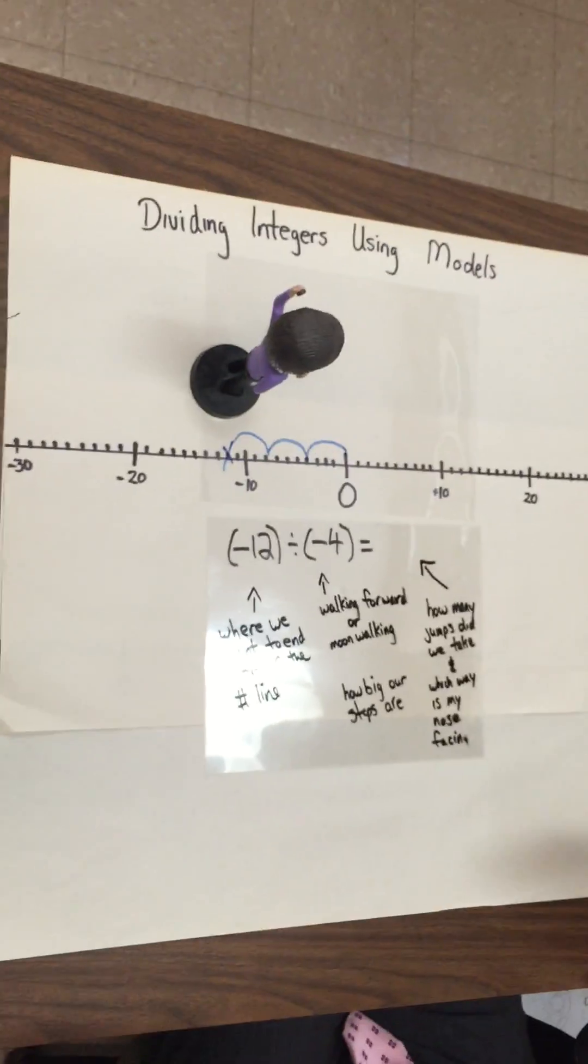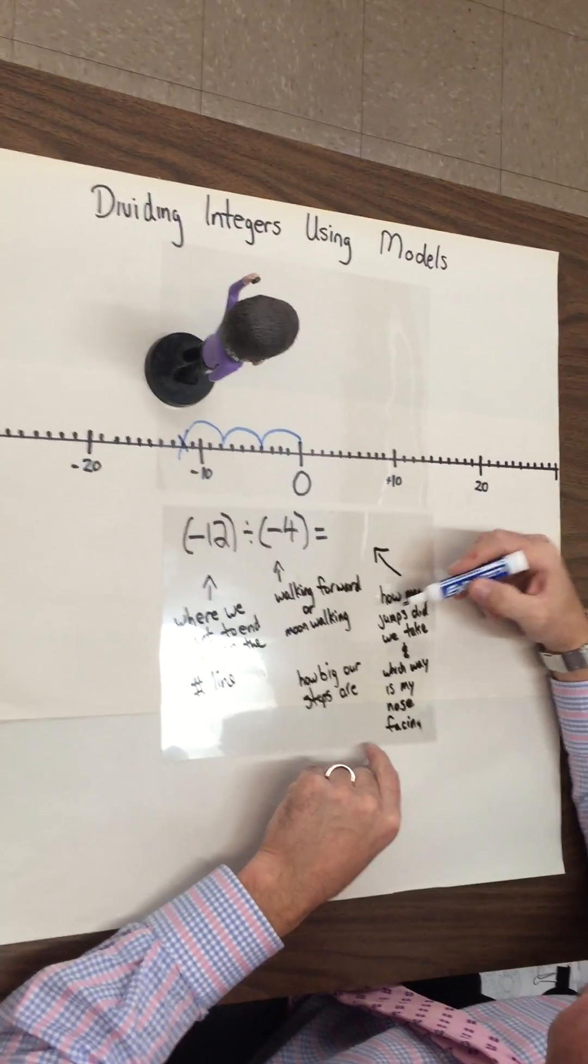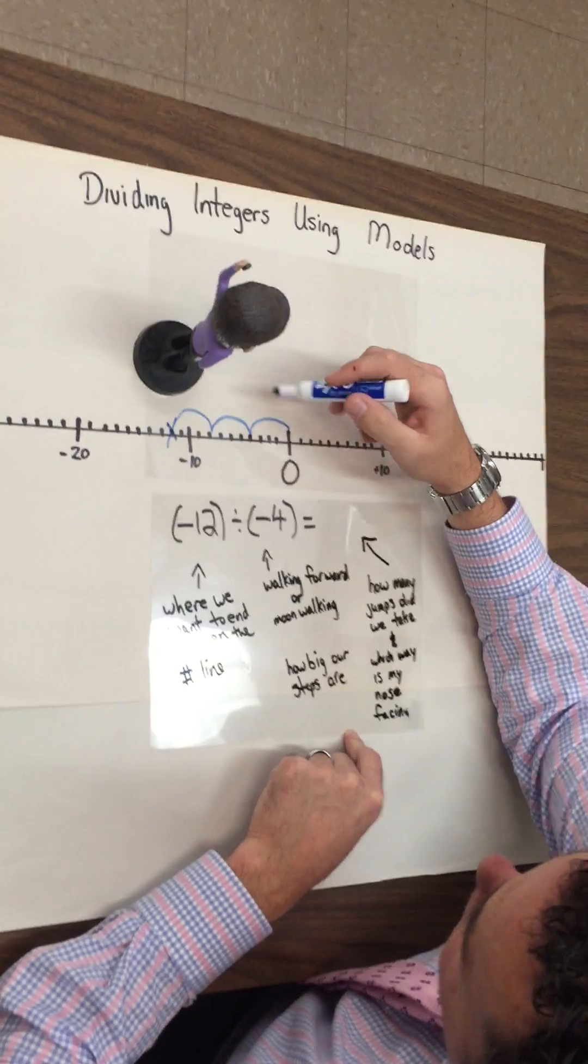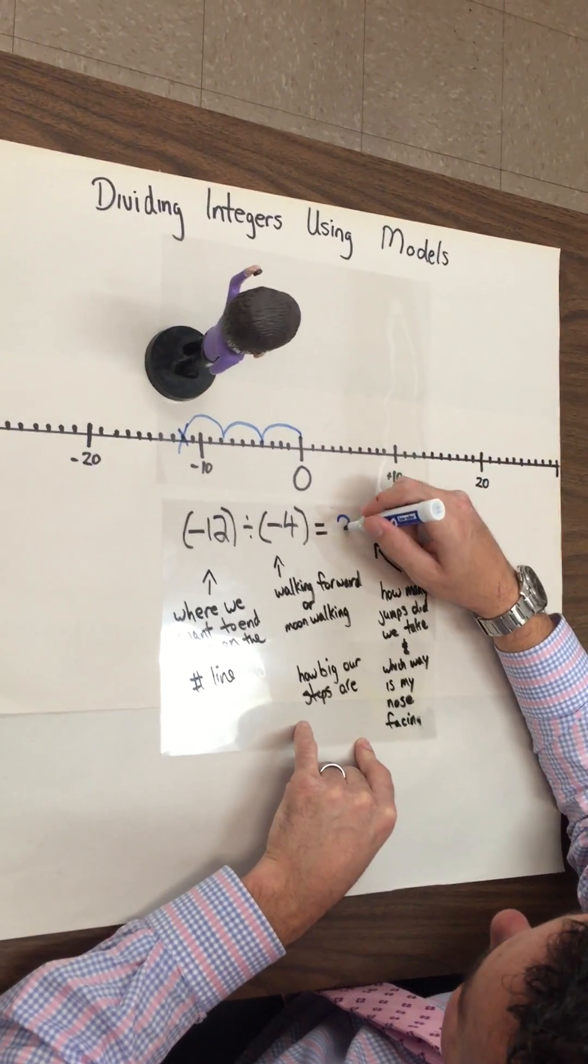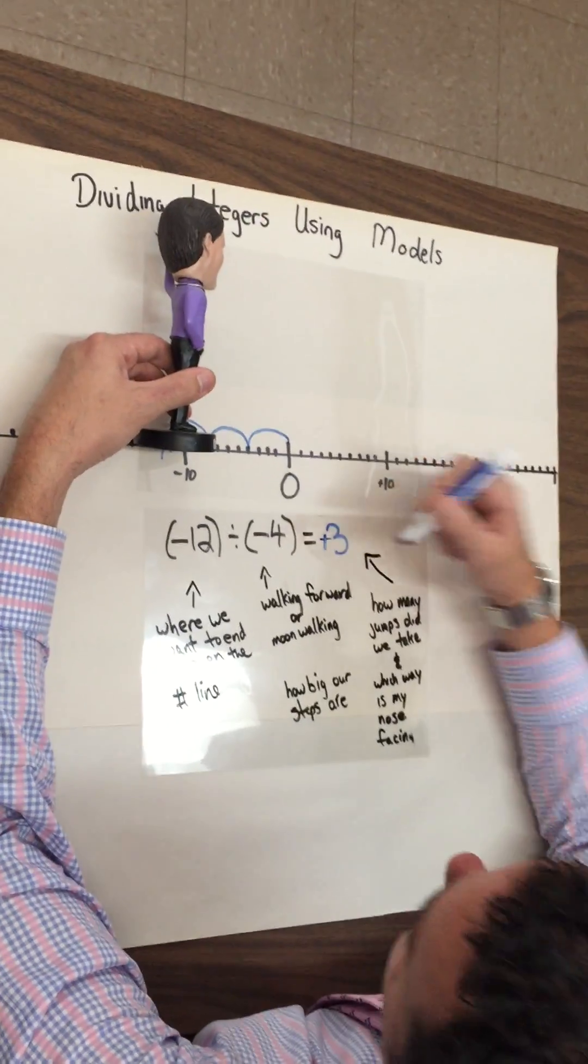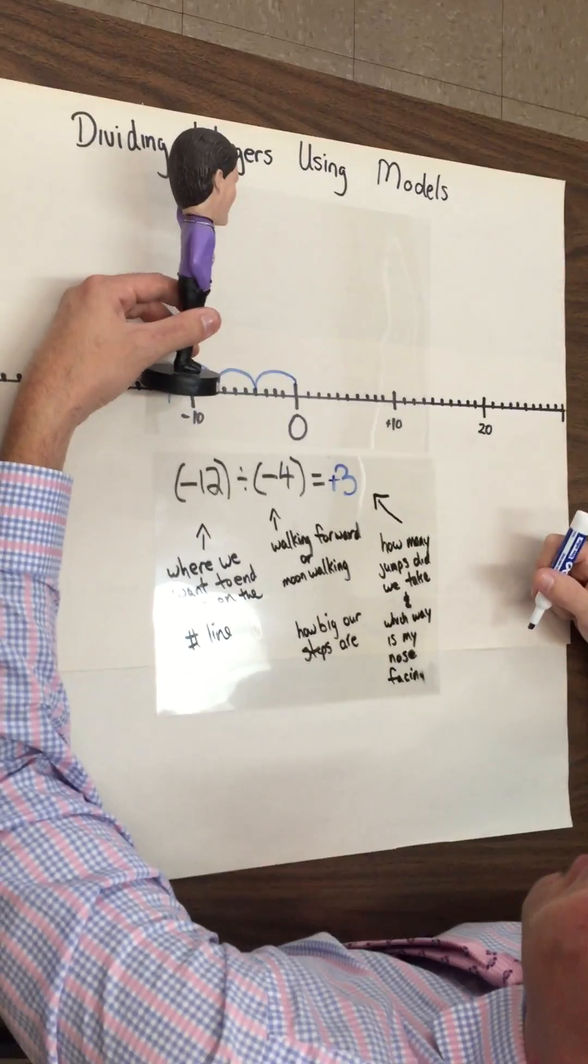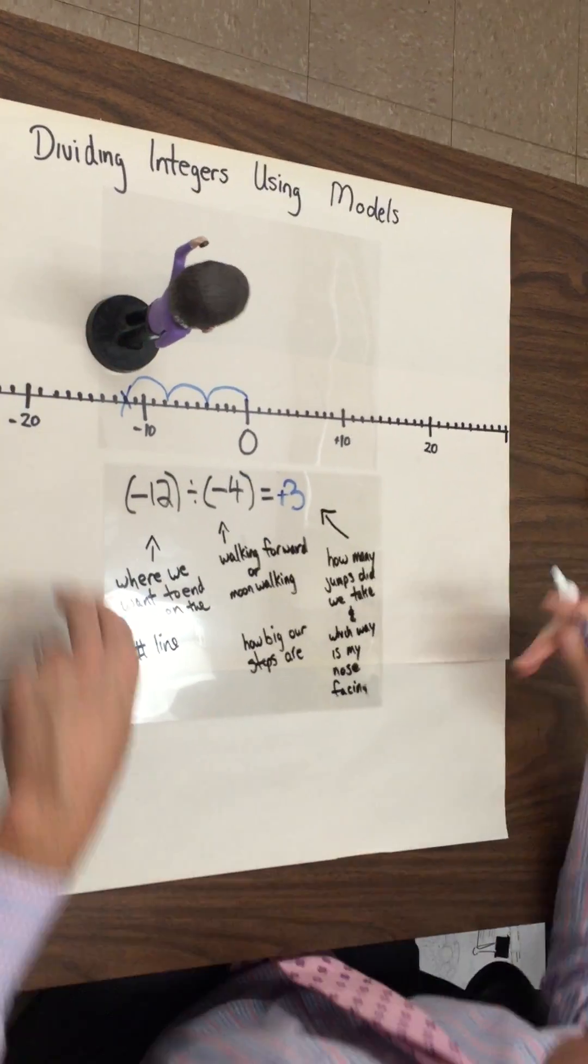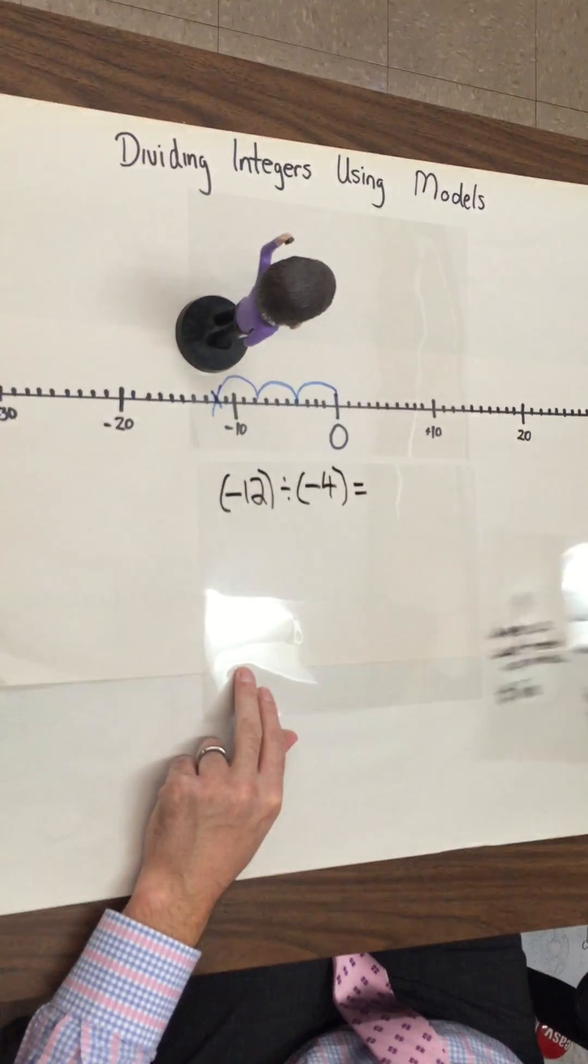Now, my answer. What is it? Well, how many jumps did we take? In this case, one, two, three jumps. Which way is my nose facing? Well, if you look like this, my nose right here is facing towards the positive sign. That means my answer is positive three. Beautiful. Okay.